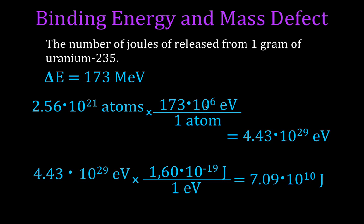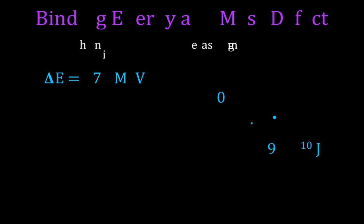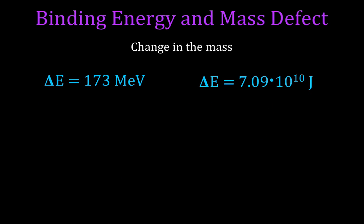Now let's convert that energy into the equivalent mass lost using Einstein's equation E = mc². In this equation, E is in joules, m is in kilograms, and c is the speed of light: 3.0×10⁸ meters per second, which we square. Solving for mass gives m = E / c².